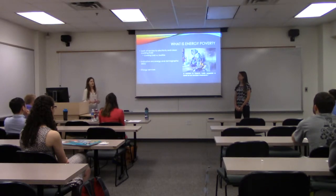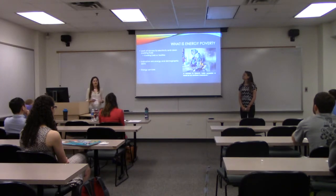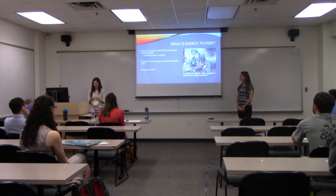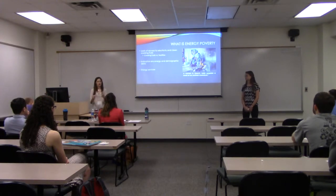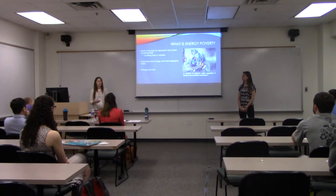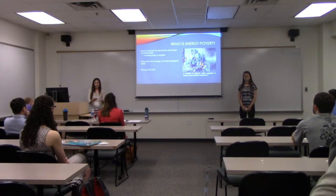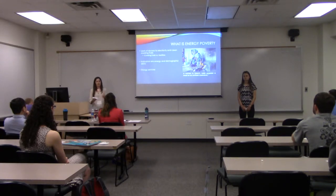What is energy poverty? There's no universally accepted definition because it's such a complex problem. This project uses a broad definition: it is the lack of access to electricity and clean cooking fuels. There's a difference between fuels and facilities — clean cooking fuels are what you use to burn to create energy, and facilities are the means in which you burn those fuels. An example of clean cooking fuel would be kerosene; an example of the facility would be a gas stove or a kerosene lamp.